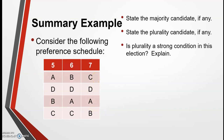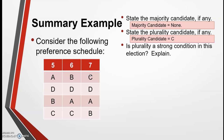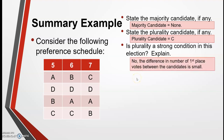Let's look at a summary example bringing together everything from Unit 1's voting methods. First, state the majority candidate: majority requires more than half. With 18 total votes, half is 9, so more than half would be 10. Nobody has 10 or more votes, so there is no majority candidate. The plurality candidate is simply the candidate with the most first place votes — C has 7, which is more than anyone else, so C is the plurality candidate. However, this is not a strong condition: C has 7, B has 6, and A has 5, so C just barely leads.